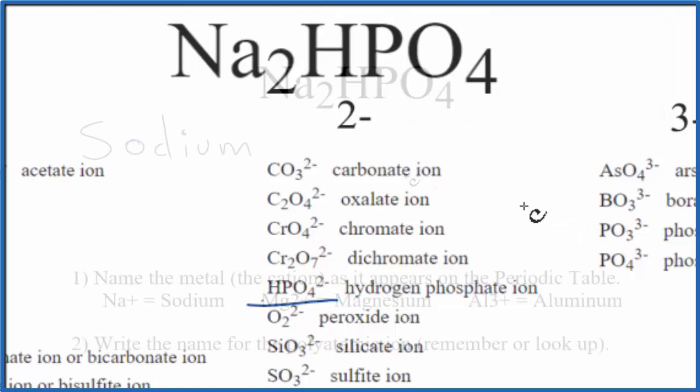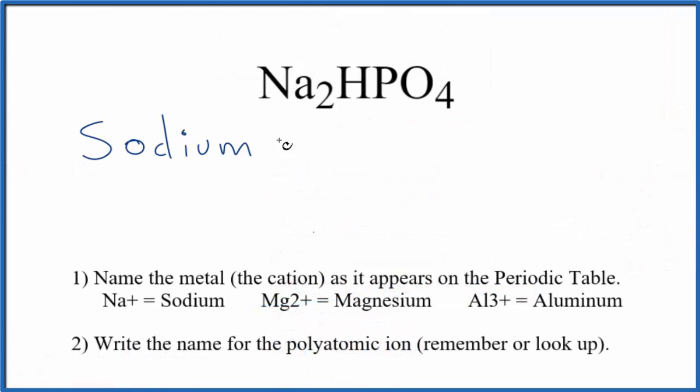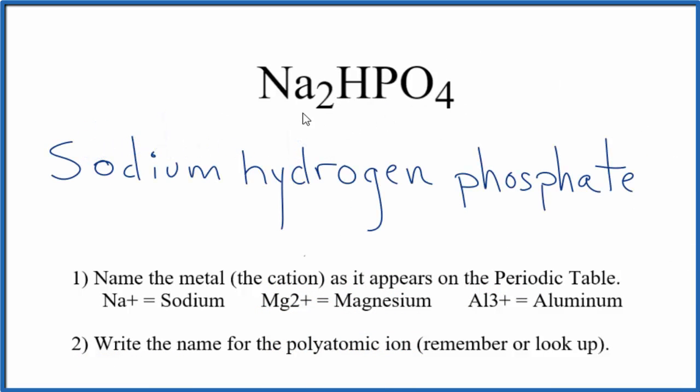Let's go back to our name. We're going to call this sodium hydrogen phosphate. The name for Na2HPO4 is sodium hydrogen phosphate.